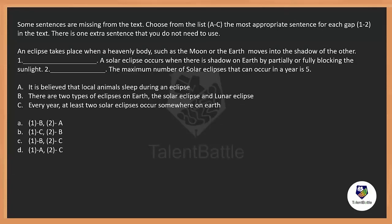Now let us move on to one more. The direction says some sentences are missing from the text. Choose from the list A to C the most appropriate sentence for each gap one to two in the text. So out of three, I have to select two — there is one extra sentence that need not be used. This is again a sentence completion in the form of sentences. Now let's look at the question: 'An eclipse takes place when a heavenly body such as the moon or the earth moves into the shadow of the other. Dash. A solar eclipse occurs when there is a shadow on earth by partially or fully blocking the sunlight. Dash. The maximum number of solar eclipses that can occur in a year is five.'